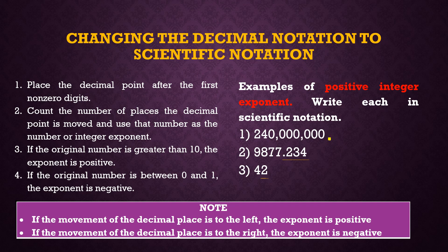The decimal point of 240 million is at the end, and we move it to the left until we have 2.4 as our number. Then we multiply by 10 raised to the number of places moved: 1, 2, 3, 4, 5, 6, 7, 8. So 240 million equals 2.4 times 10 raised to 8. We moved to the left, so the exponent is positive.